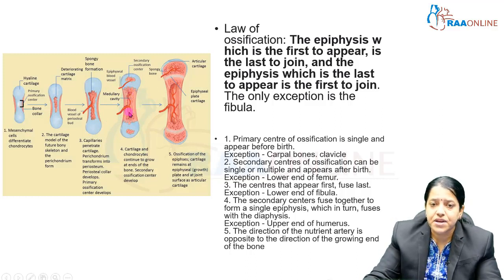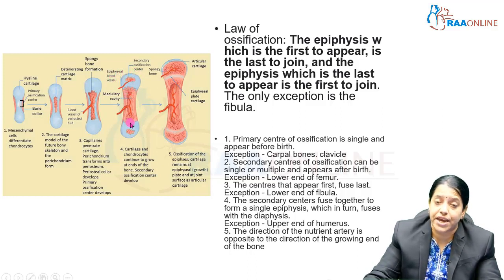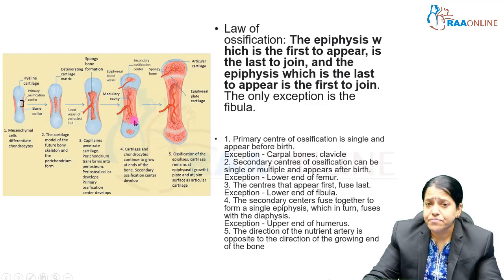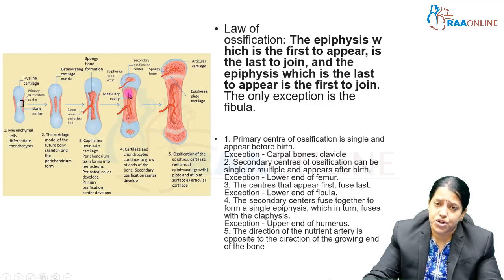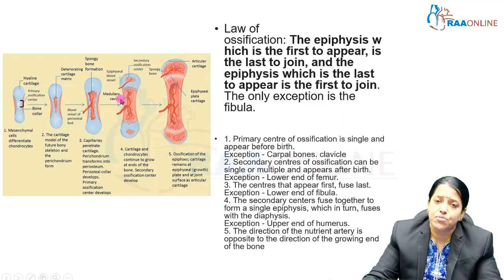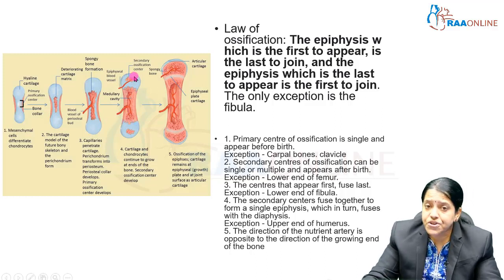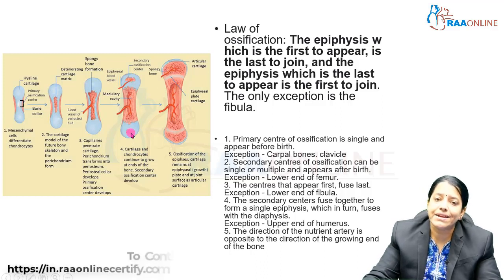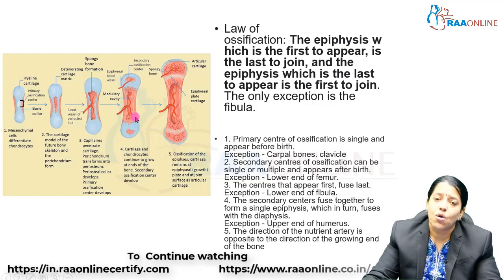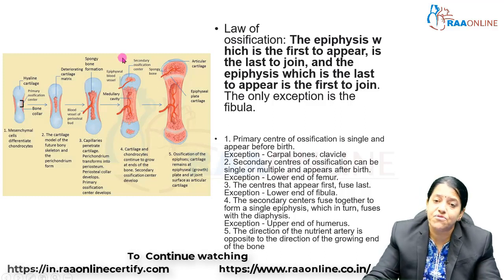The perichondrium is replaced, but the ends of the bone remain cartilaginous while the shaft is being laid with bone tissue. This is the situation at birth — the ends are more or less cartilaginous, with bony tissue only in the center along with a medullary cavity. After birth, secondary centers appear at the ends of the bone, and these secondary centers help the bone develop further.